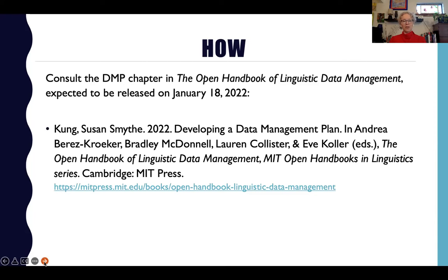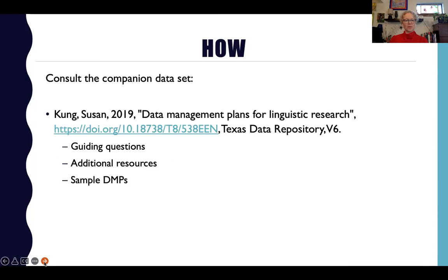For more information about how to write a DMP, consult my chapter called Developing a Data Management Plan in the forthcoming book Open Handbook of Linguistic Data Management, expected to be released on January 18th, 2022. Also see the companion dataset called Data Management Plans for Linguistic Research, which is open access on the Texas Data Repository. It includes guiding questions designed to lead the researcher in thinking through all of the data management needs for a particular project, and in answering these questions, thus writing the DMP. There are also additional resources and sample DMPs in this dataset.